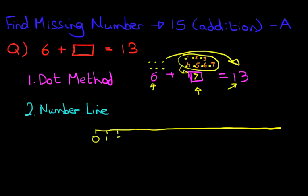0, 1, 2, 3, 4, 5, 6, 7, 8, 9, 10, 11, 12, 13, 14, and 15. So that is our number line from the numbers 0 to 15.